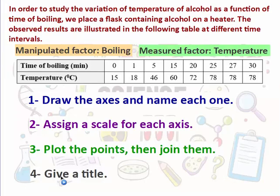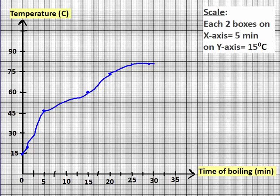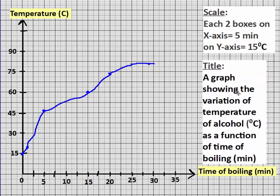After we're done plotting and joining the points, we give the graph a title. The title should follow the form: 'A graph showing the variation of [measured factor] as a function of [manipulated factor].' So the title is: 'A graph showing the variation of temperature of alcohol as a function of time of boiling.' With that, we are done drawing this graph.